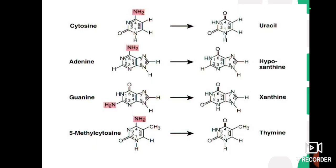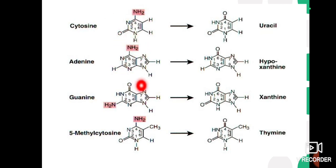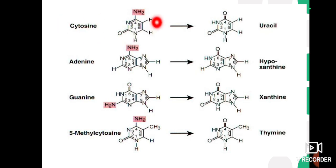This process is known as deamination. There are four types of nitrogenous bases: cytosine, adenine, guanine, and 5-methylcytosine. In all four structures you can see the amino group NH2. If the removal of the amino group takes place in the nitrogenous bases, it results in changes in their structure. In the case of cytosine, removal of the amino group changes it into uracil.